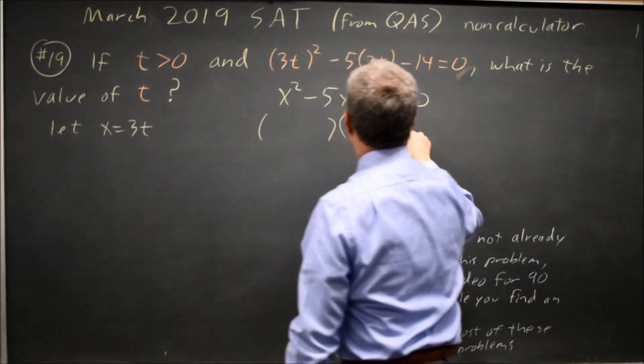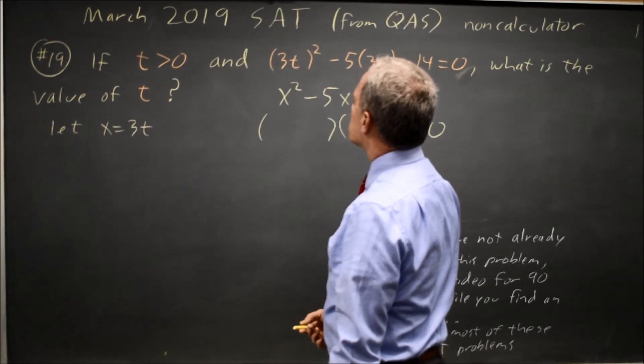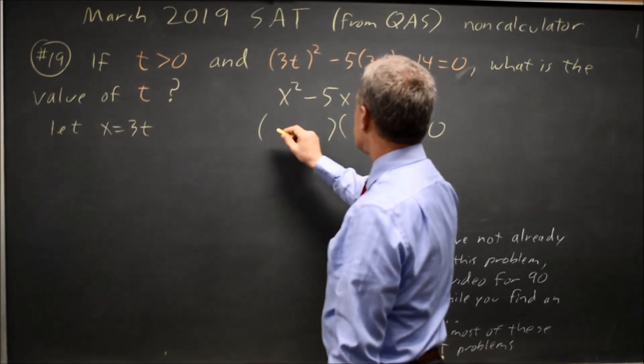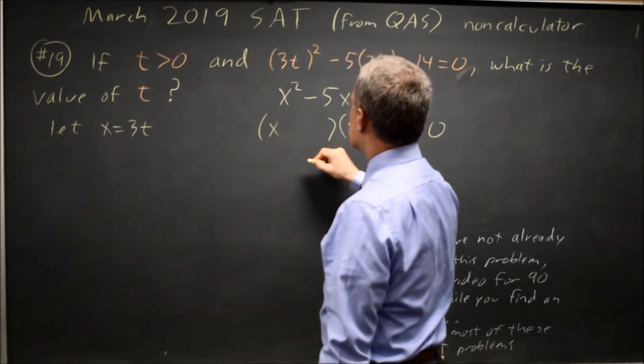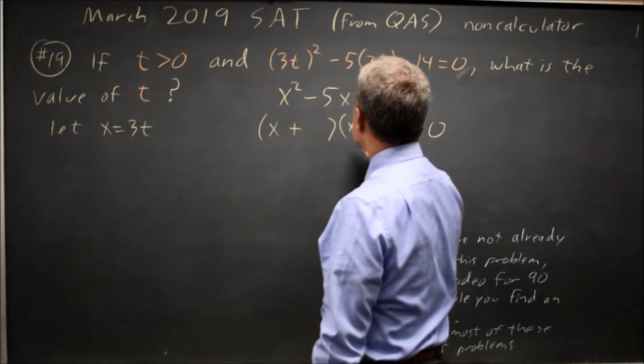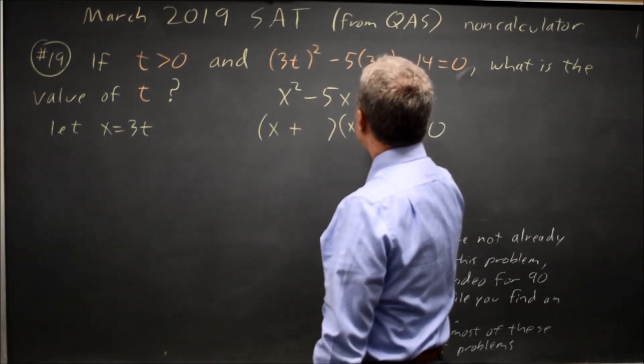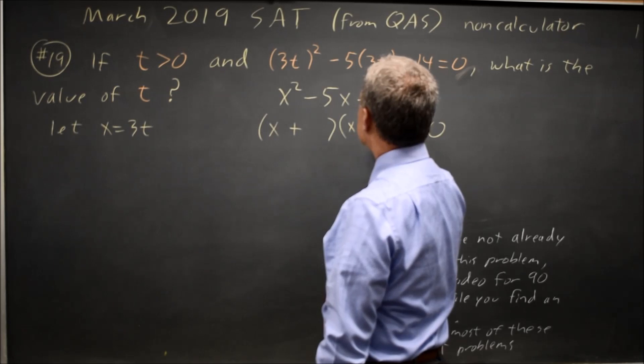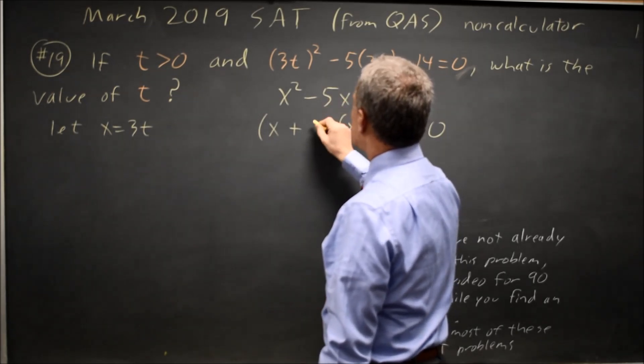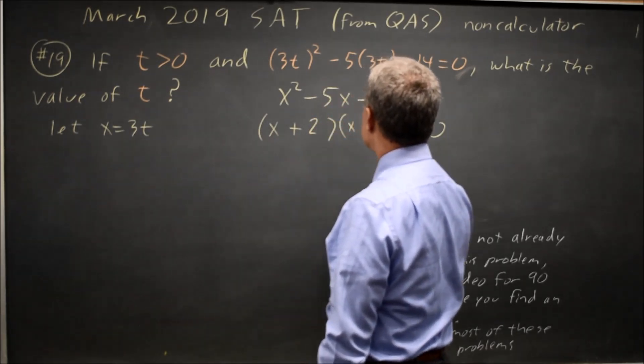That factors easily, far better than something that starts with 9t squared would. So it has x and x, and 2 times 7 is 14, and 2 minus 7 is negative 5, so it would be plus 2 and minus 7.